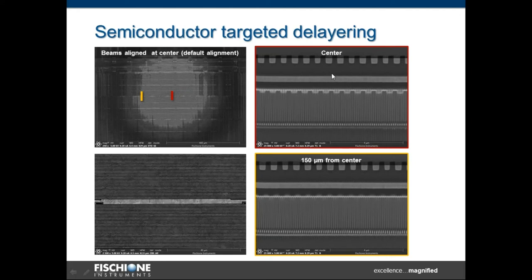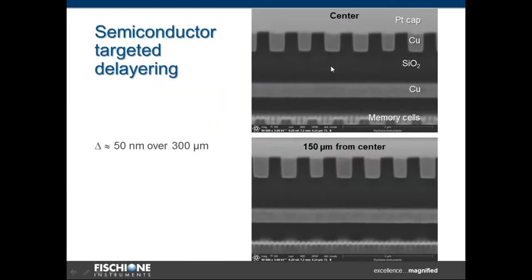So, we did a cross-section, FIB cross-section in the center, and one in the extreme of the milling area. You can see the cross-sections are very uniform, very similar. And if you look closer, you will find the uniformity of the milling is 50 nanometers over 300 microns. So, it's very nice and clean, the targeted delaying process.